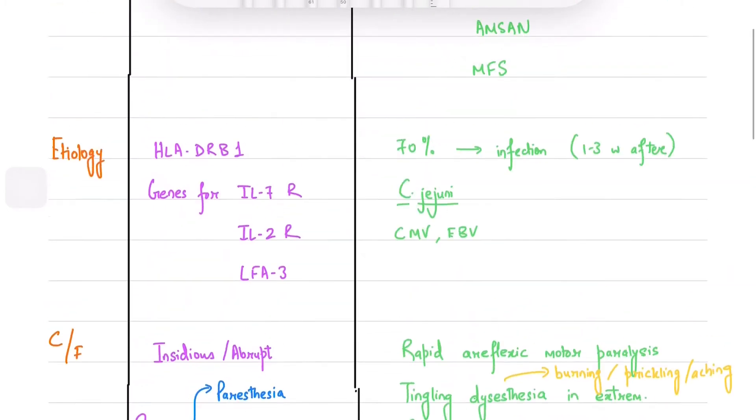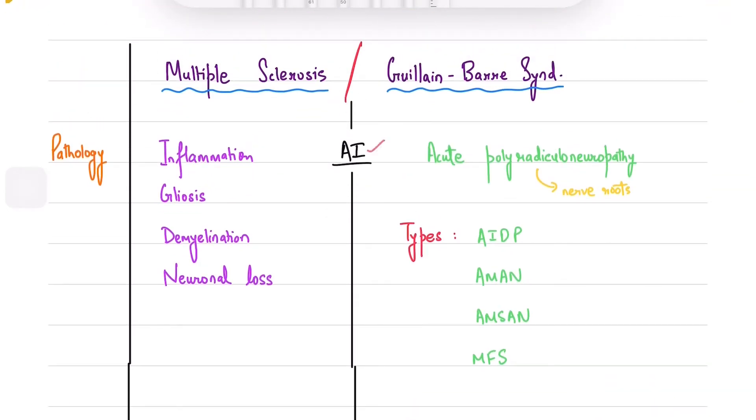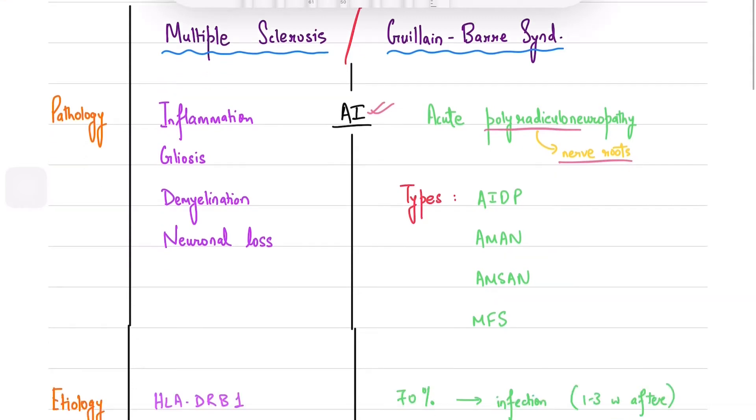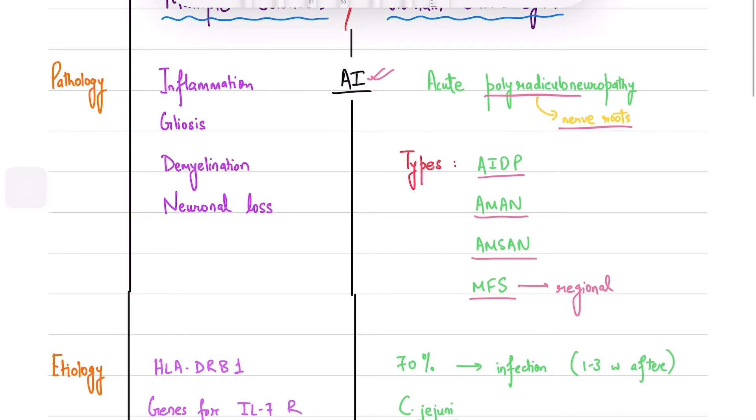Let's start off with the pathology. GBS is an autoimmune acute polyradiculoneuropathy. It is classified into different variants like acute inflammatory demyelinating polyneuropathy, acute motor axonal neuropathy, acute motor sensory axonal neuropathy, and regional GBS variants like Miller-Fisher syndrome on the basis of pathology. AIDP is the most well-known among these.